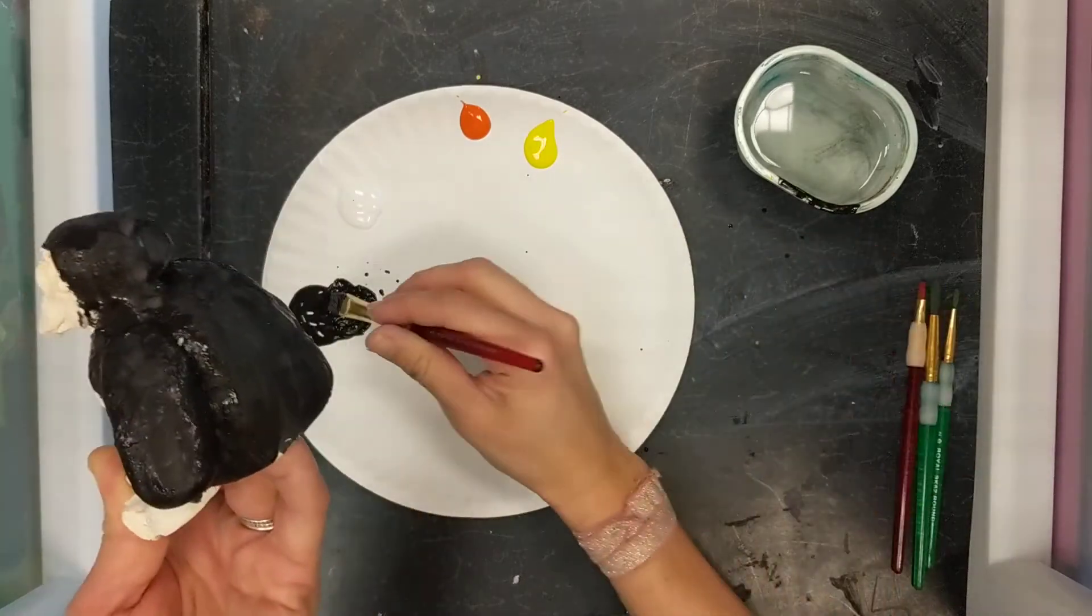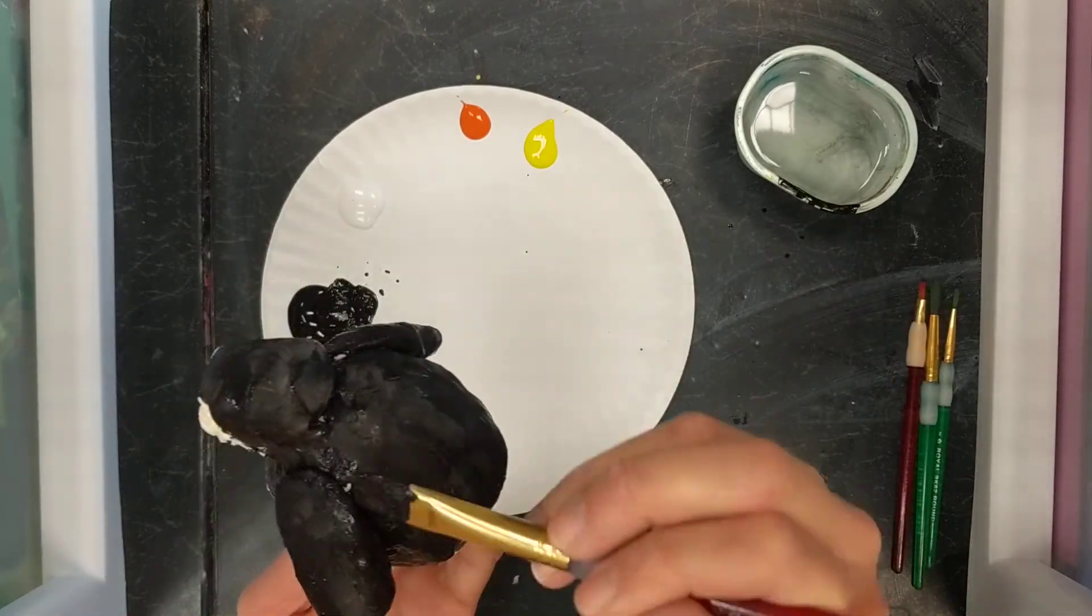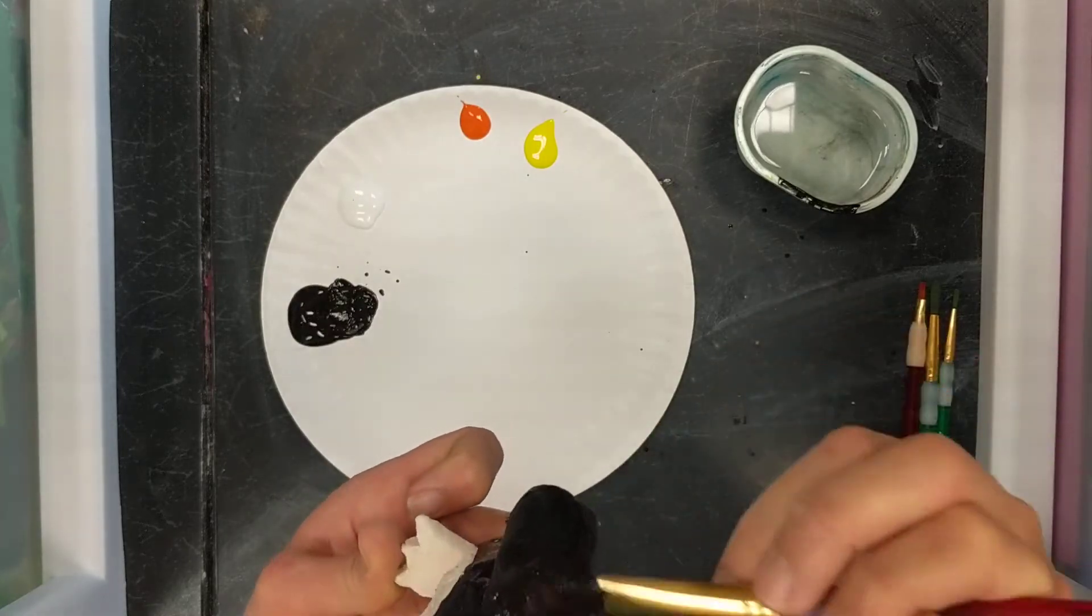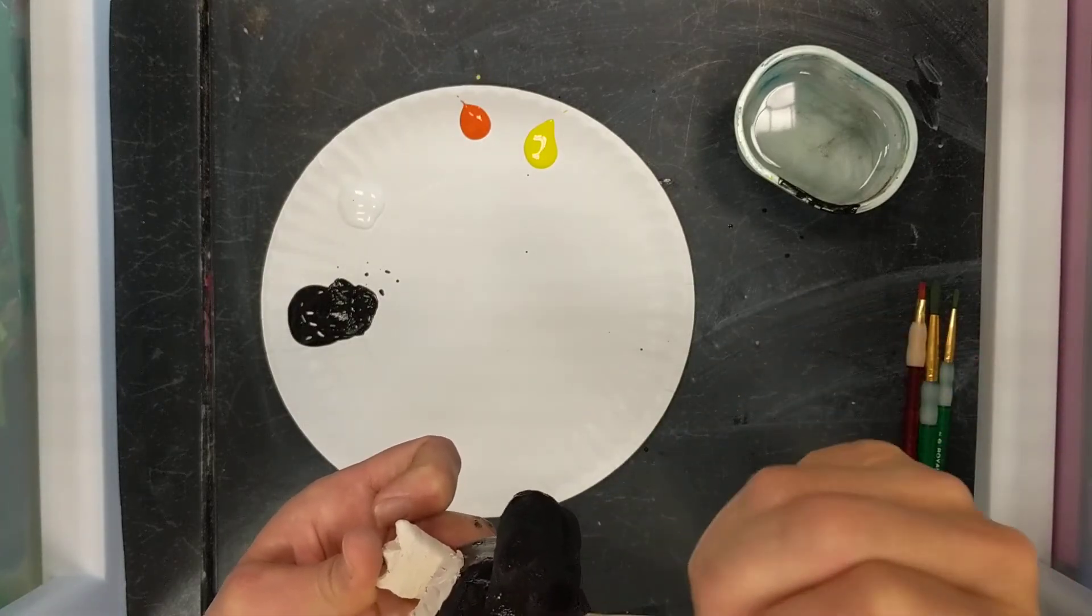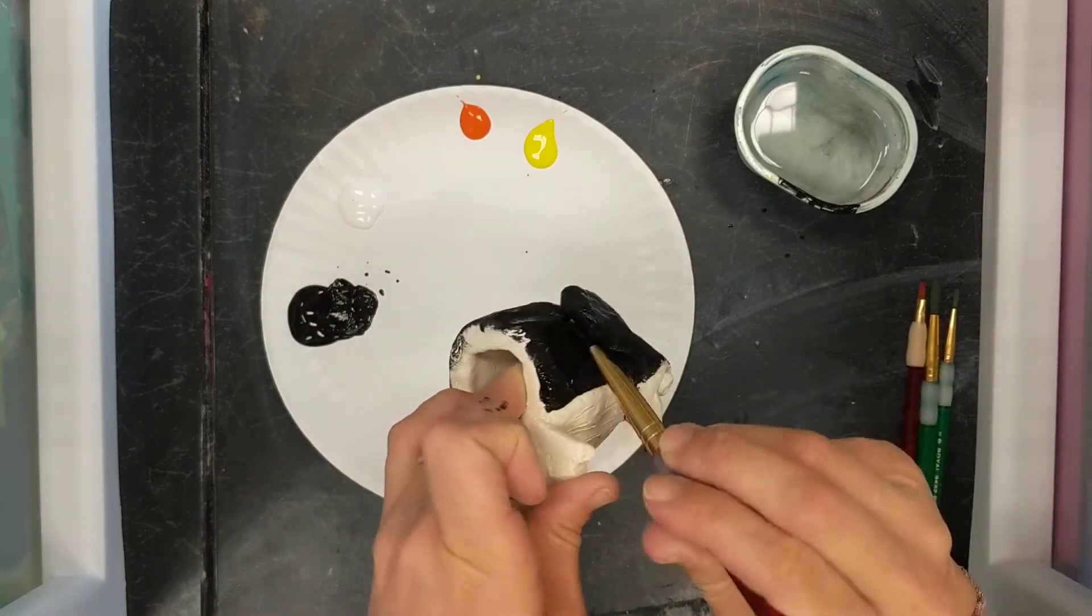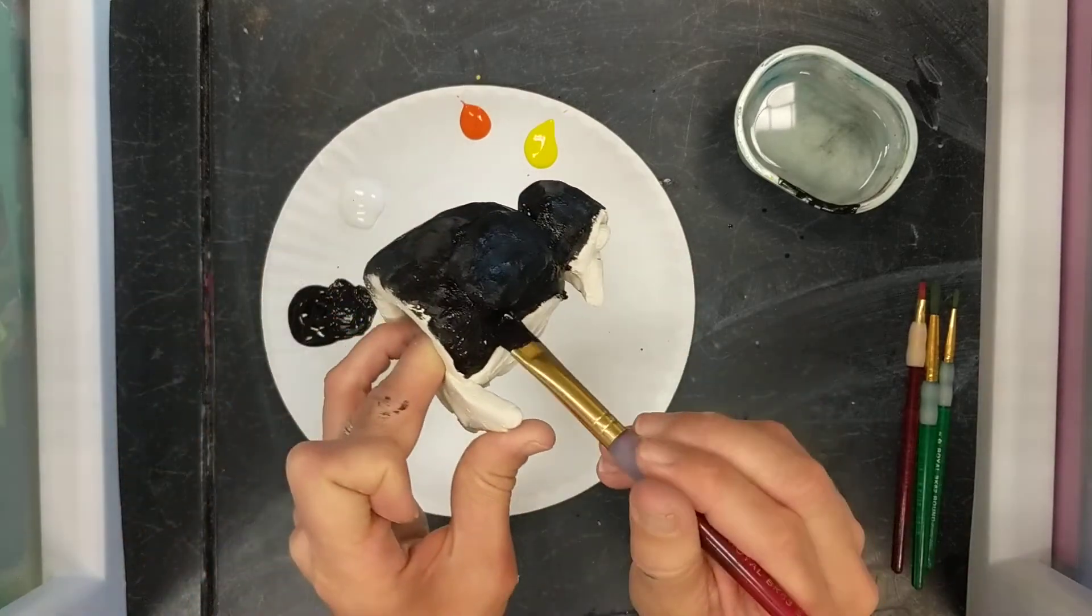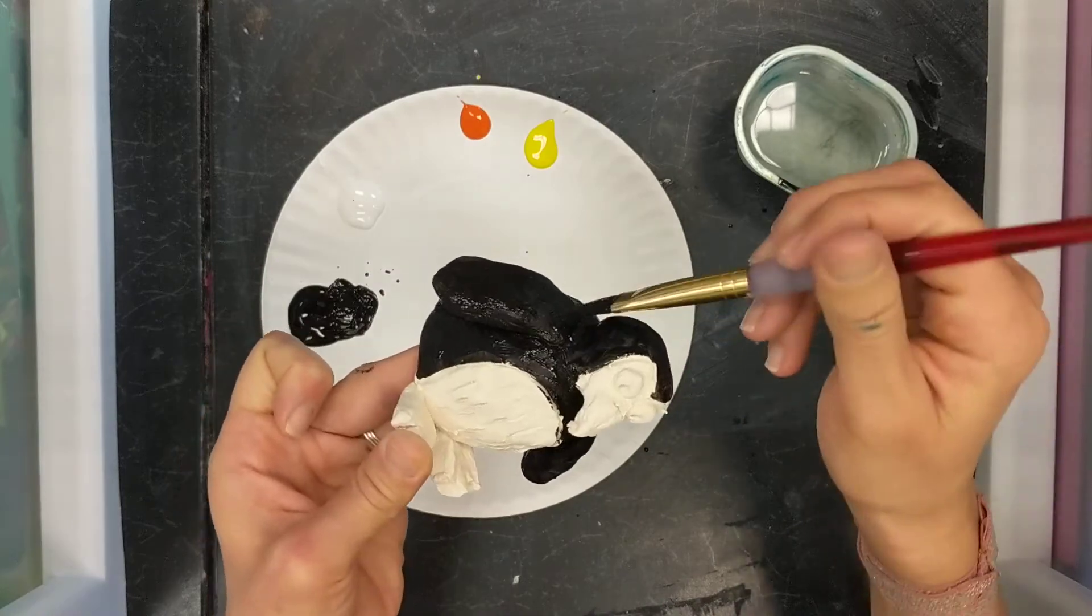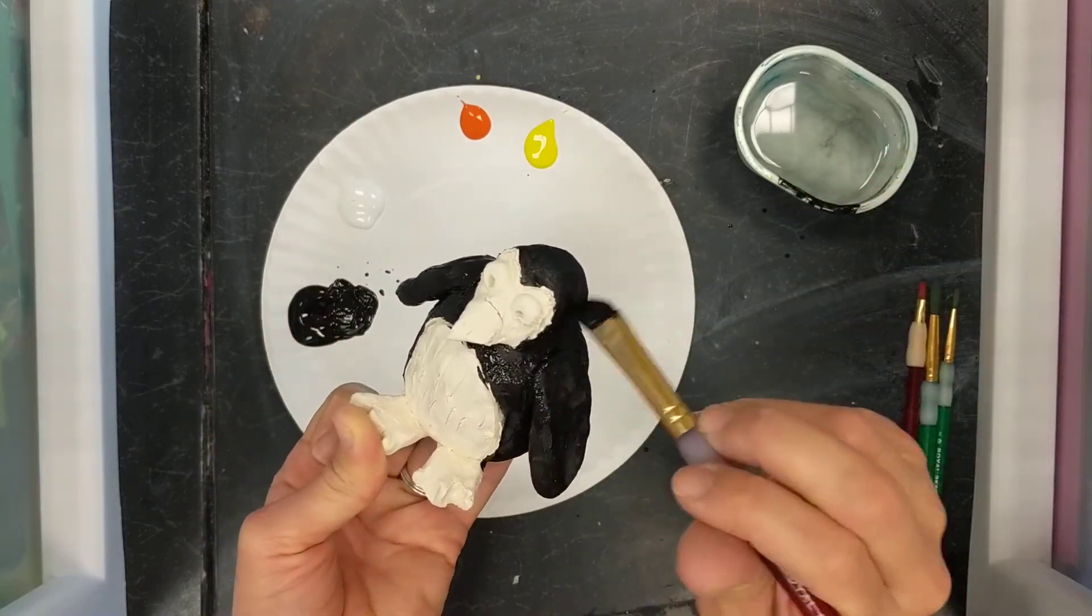And notice even little spots. You want to look around if there's a spot of clay coming through, the white clay. I want to fill that in. I don't want any of that showing. Okay. Once it's all black, I think I'm good to go.